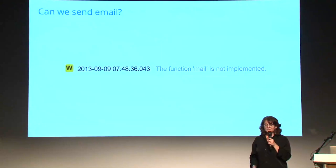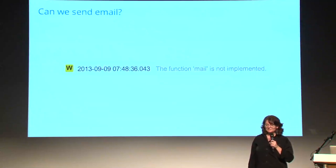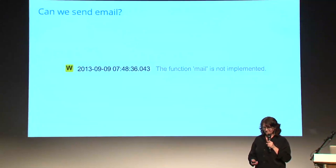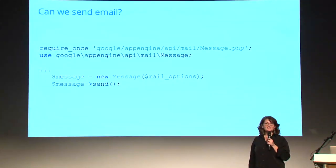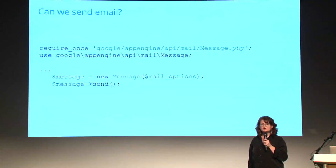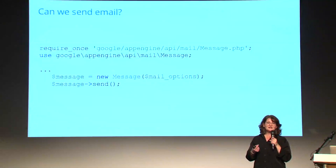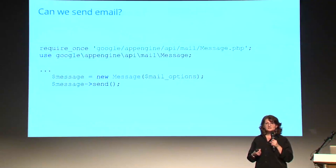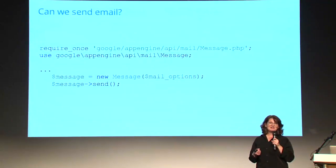There's one more thing: sending email. If we try to send email we get an error. We're going to use App Engine's Mail API — it's really straightforward. You create an array containing the message information: to, subject, body, etc. Then you create a new message object and call send. That's the core use of the Mail API.